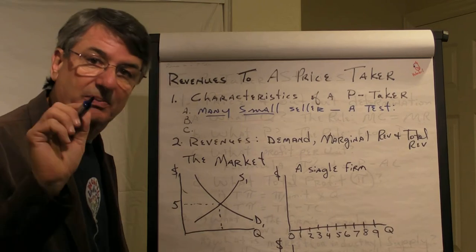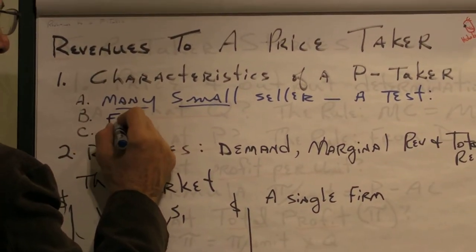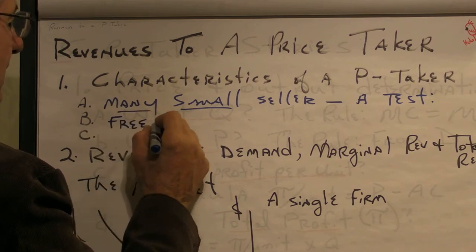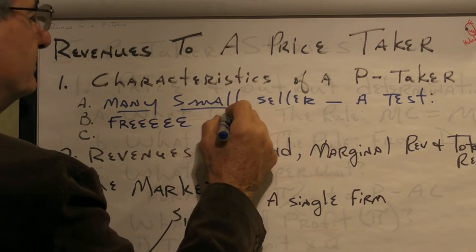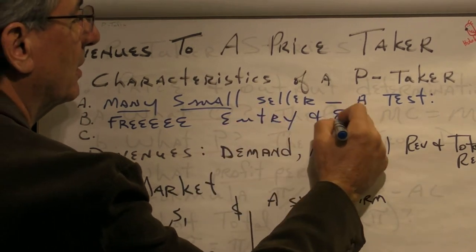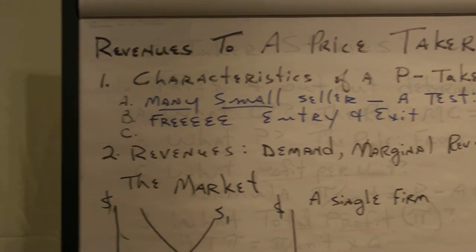They must accept the price that the market brings them. The second characteristic is that entry and exit are, just like Larry Miller says, free. There are no barriers. Firms can get in or exit if they please.